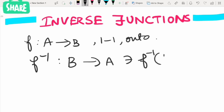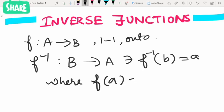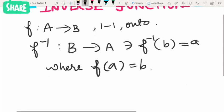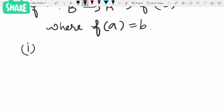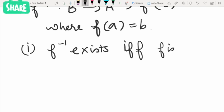It is defined as f inverse of b equals a, where f of a is b. The first thing to be noted is that f inverse exists if and only if f is bijective, that is, it is both one-to-one and onto.